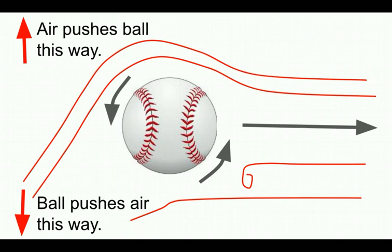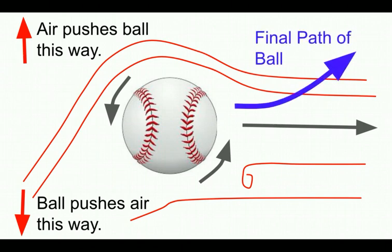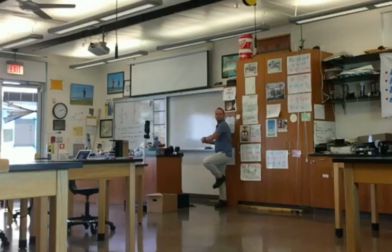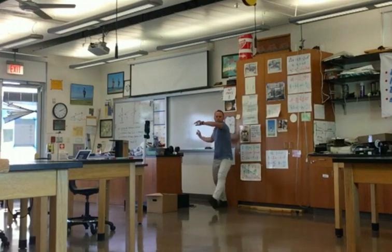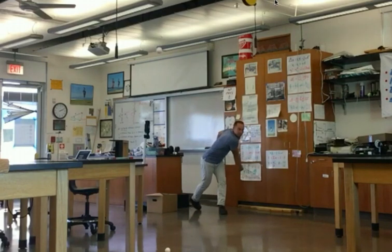In my diagram here, the ball has thrown the air downward, and so the air is going to throw the ball upward. So ultimately the final path of the ball will curve toward the side in which the air had an easier time getting around the ball. Remember that the ball is going to curve toward the side in which the air has an easier time passing by the ball.